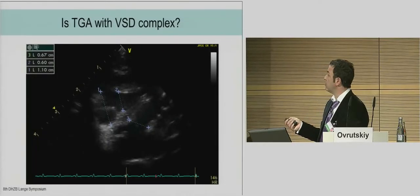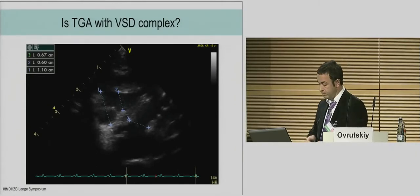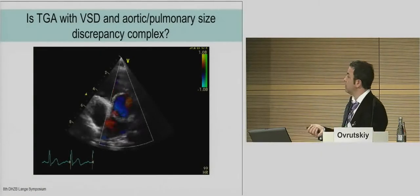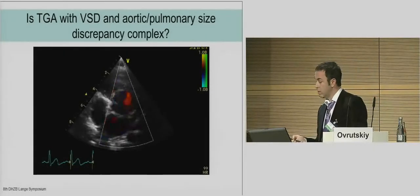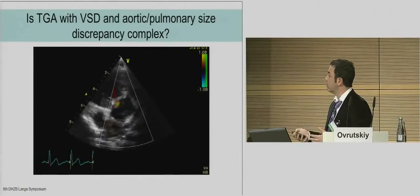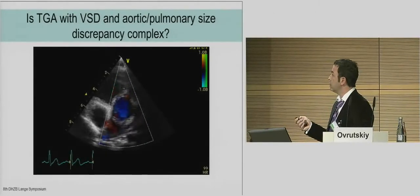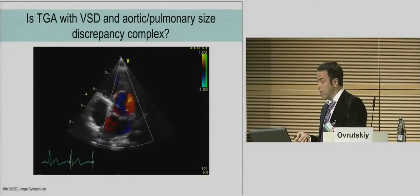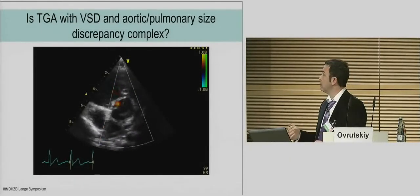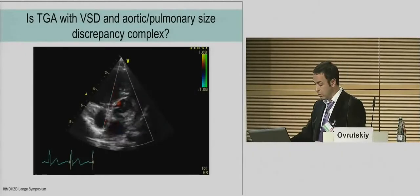We can measure everything we need: the VSD, demonstrate the conus, the outflow, and the aortic valve. This echocardiography from two years after arterial switch operation shows a patient with discrepancy in size of the aortic and pulmonary valves — excellent results. But there is this very mild regurgitation of the aortic valve. Probably to say it is definitely an excellent result, we should wait 10 or 20 years.